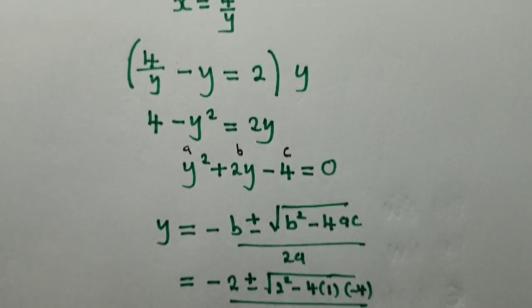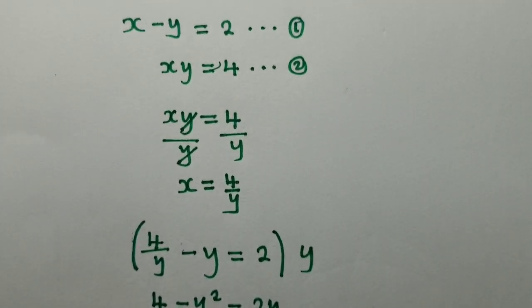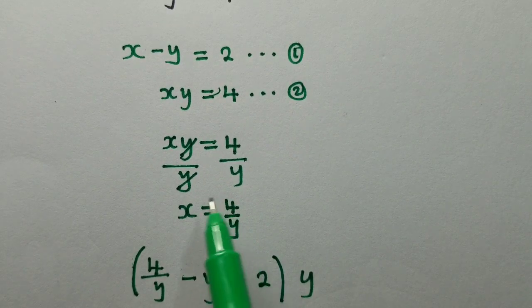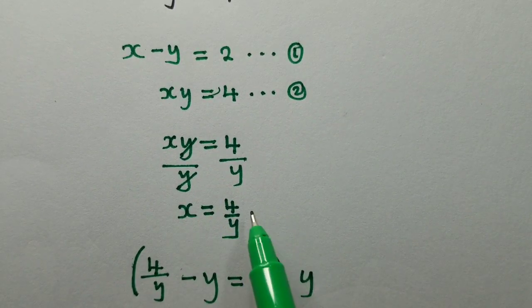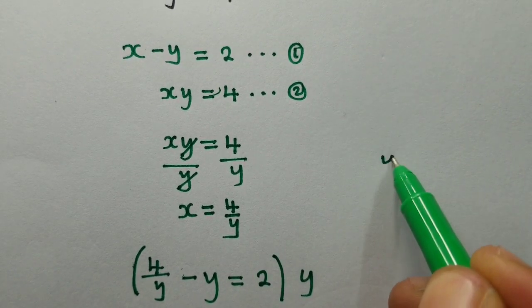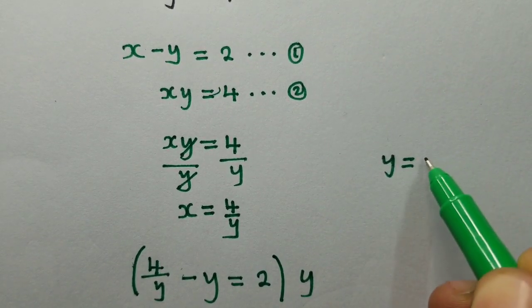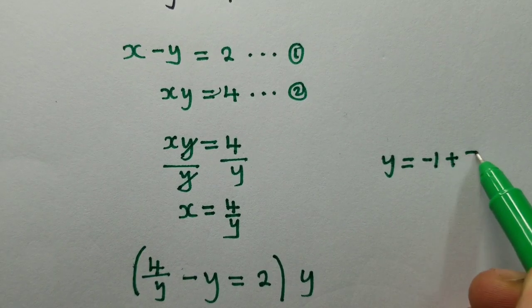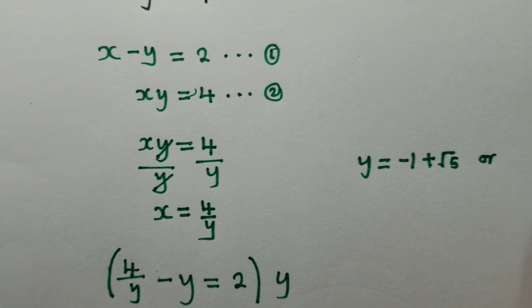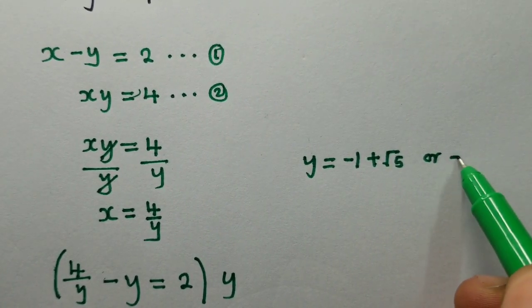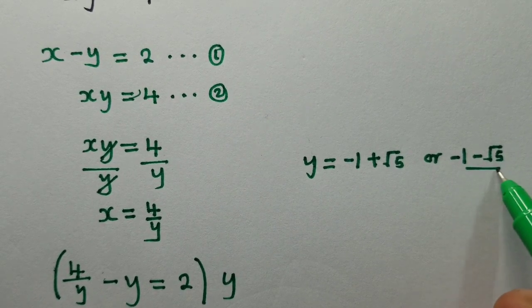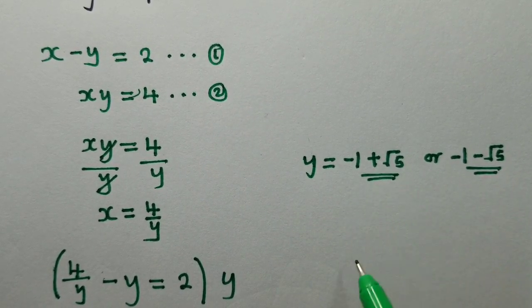So after getting these two y values, we go back to solve for x. We know that we have found two solutions for y, negative 1 plus root 5, or y is equal to negative 1 minus root 5. So these are the two y values.